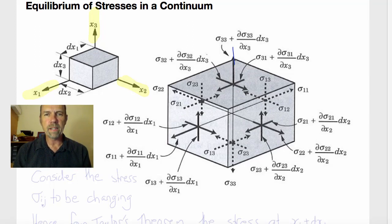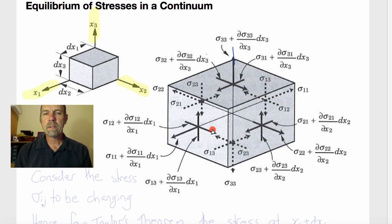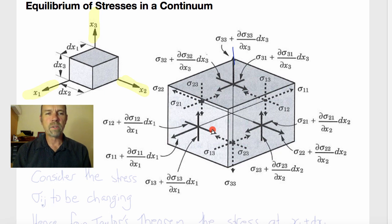Welcome back to BE110 Continuum Mechanics. Last time we introduced the stress tensor by considering the components of the tractions acting on the faces of a unit cube aligned with our unit vectors. We further imagined that these normal and shearing tractions acting on each face were equal and opposite on opposing faces, so the cube was automatically in equilibrium with all the forces and moments balancing. But in general, the stresses in a continuum would be continuously varying, so we need to come up with a derivation for the equilibrium condition on the stresses in a real non-homogeneous continuum.